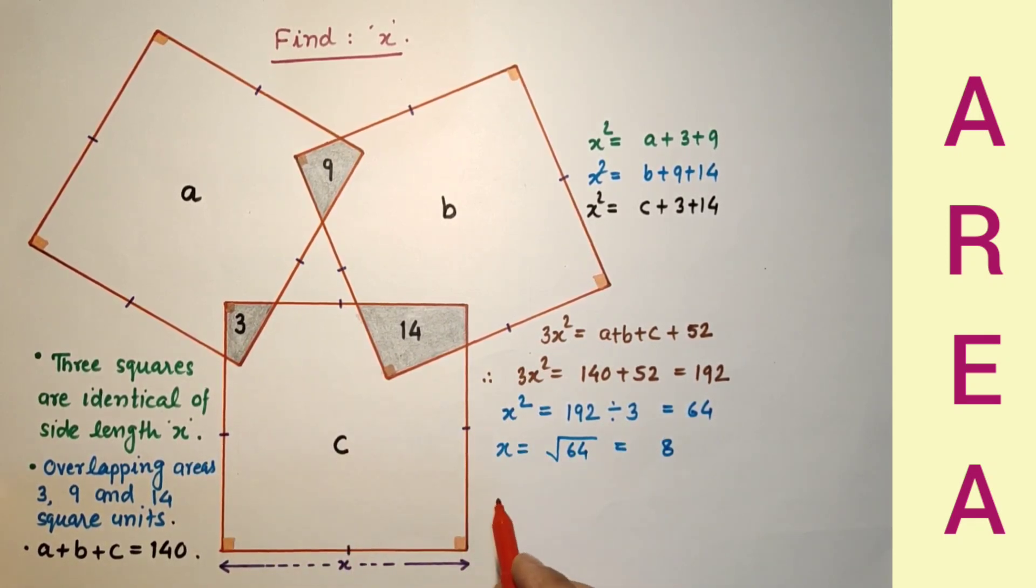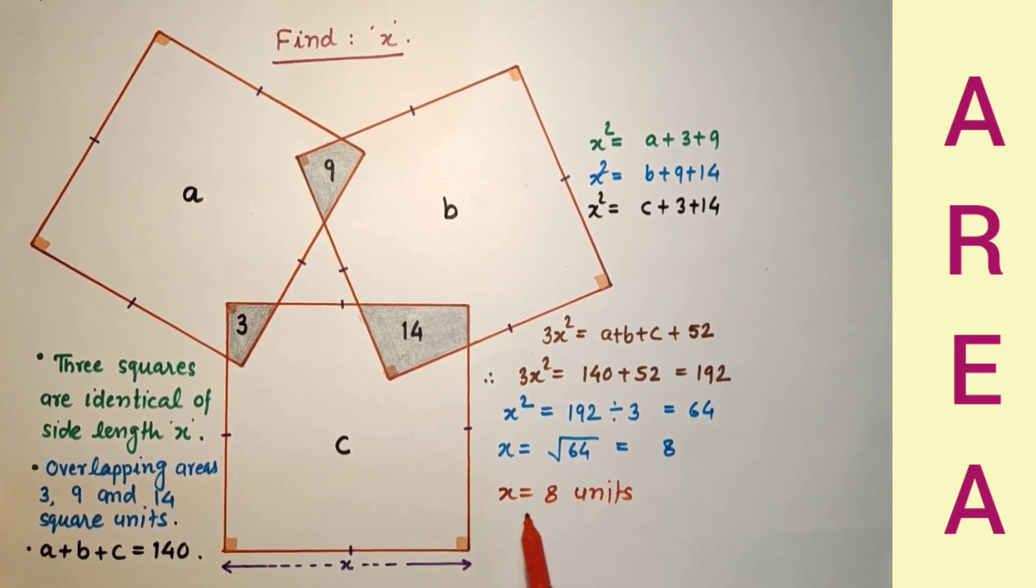Each side of this square will be 8 units, and this is the answer.